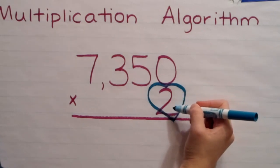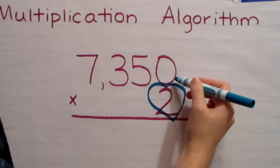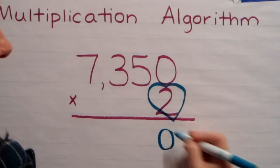I'm going to start with the ones place. I'm going to multiply the two times the digit in the ones place. Two times zero is zero, so I put the zero in the ones place below.